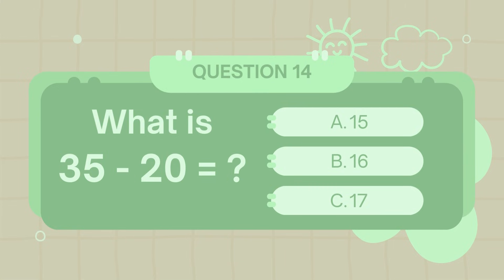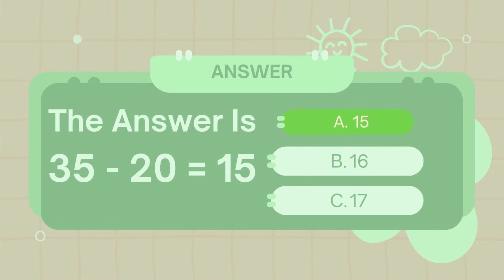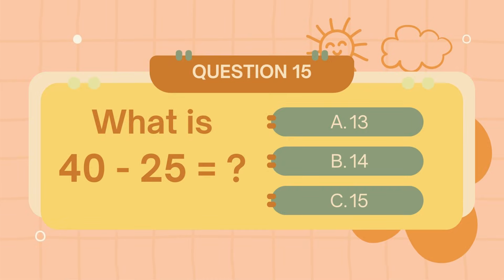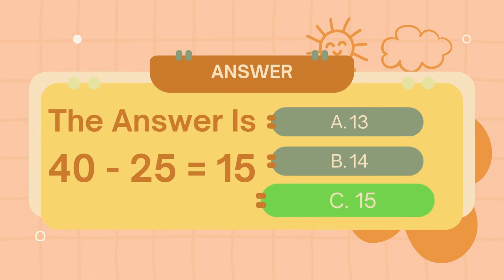What is 35 minus 20? The answer is 15. What is 40 minus 25? The answer is 15.